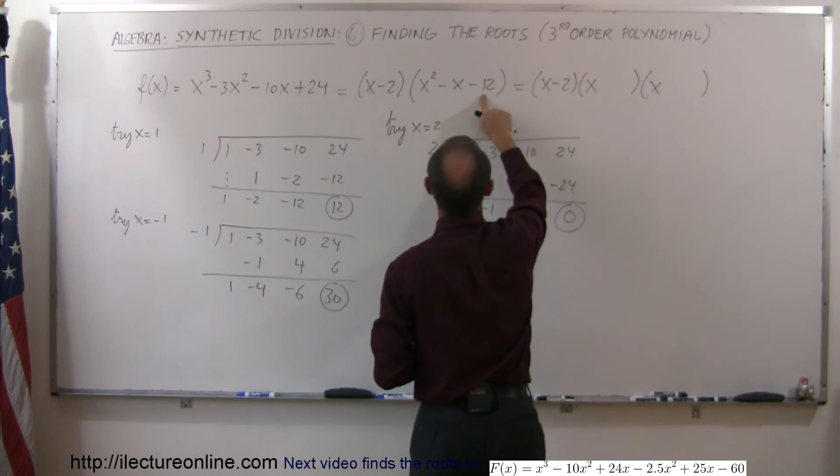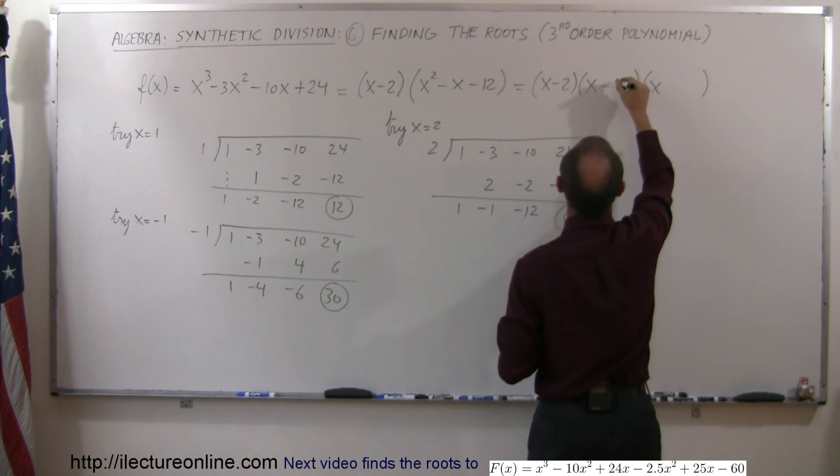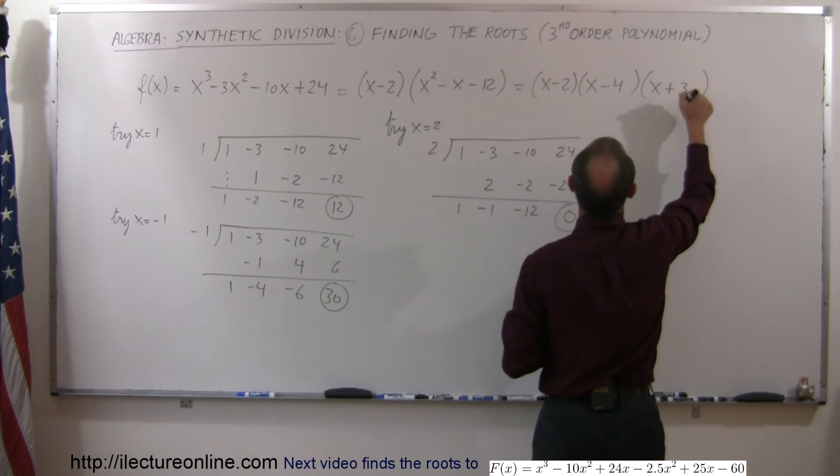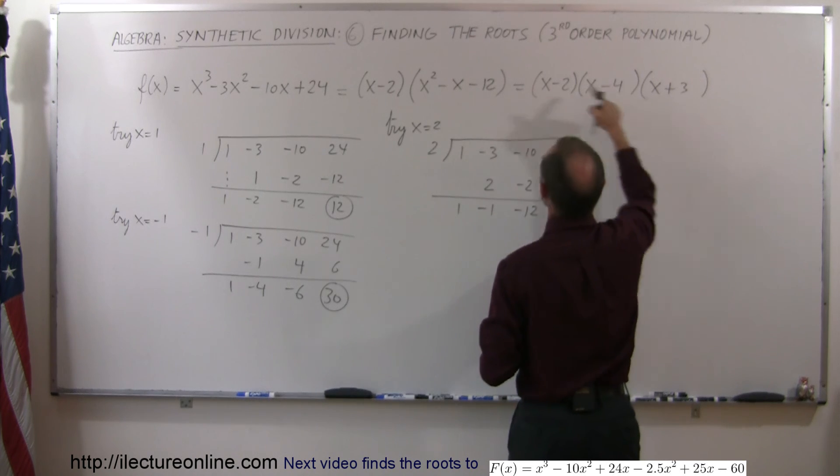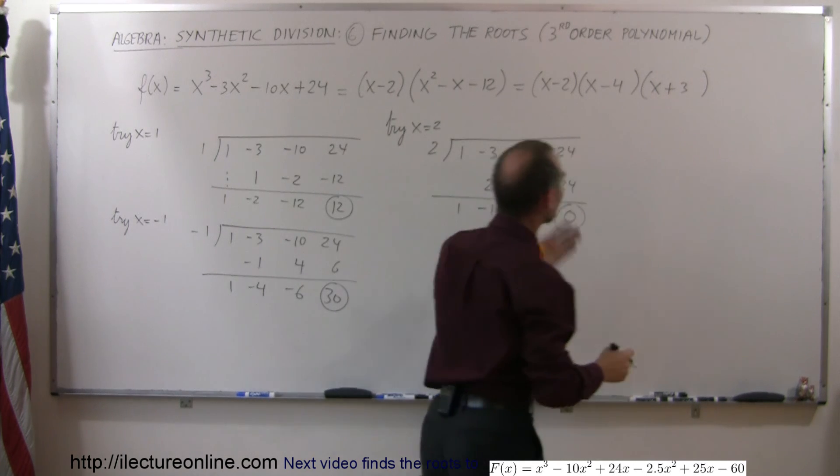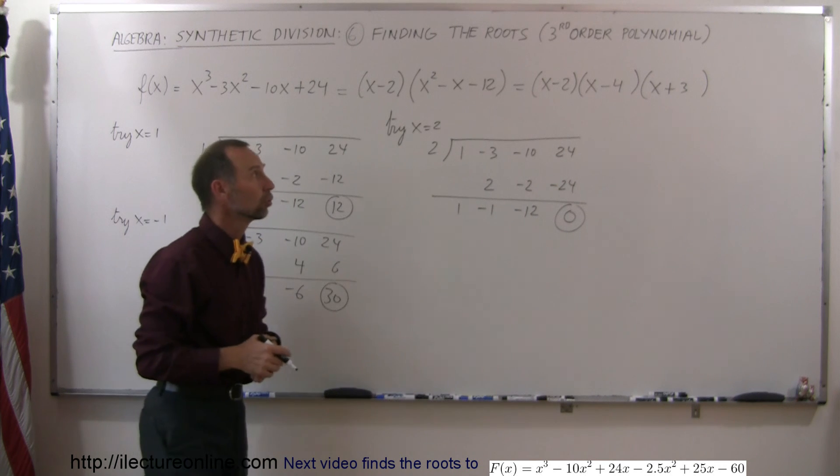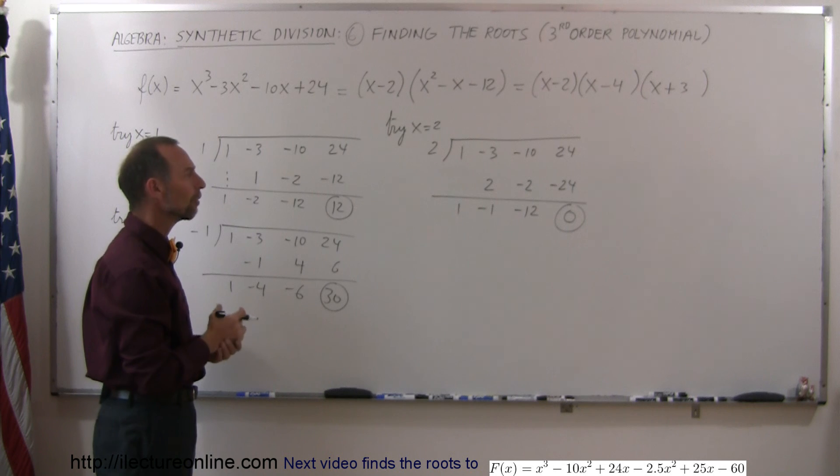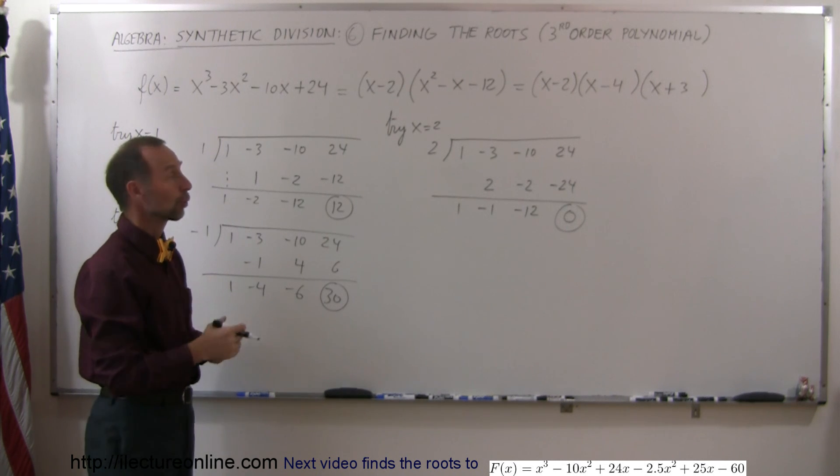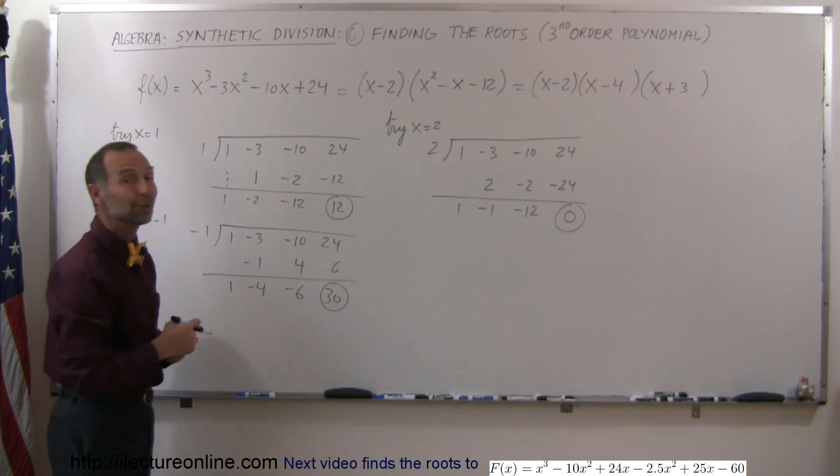We look for a number that when we add, we get negative 1. When we multiply, we get negative 12. So how about negative 4 and a plus 3? Because that multiplies together, gives me negative 12. And when I add them together, I get a negative 1. So using our factoring technique, we then easily find the other two roots. But synthetic division was able to get you the first root, which is always a very hard one to find for a third order polynomial. And that is how you do that.